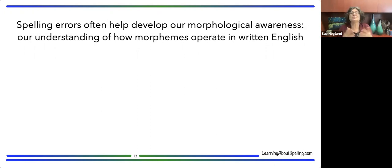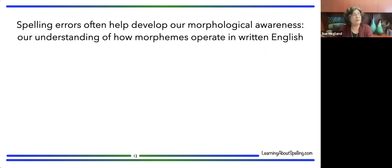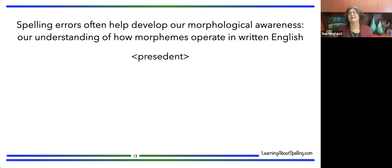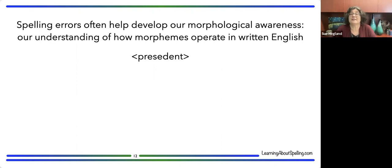Spelling errors themselves often help develop our own morphological awareness. When we see a spelling error we can't explain, that's when I get excited — it makes me realize I must have just memorized a word without truly understanding it. My oldest son is dyslexic, and a couple of years ago he wrote the word 'president' but spelled it with an 'e' instead of an 'i' in the base. That seems reasonable based on pronunciation — so how could he have known without memorizing it?